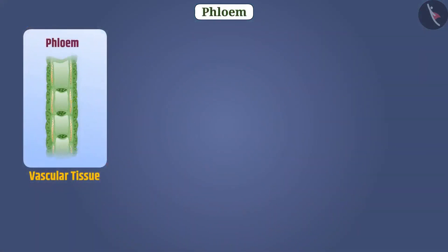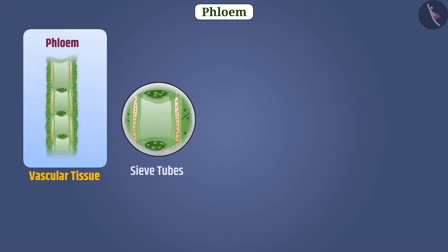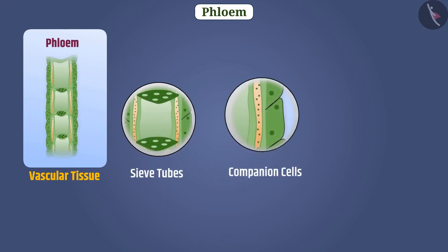The four types of cells: sieve tubes, companion cells, phloem parenchyma, and phloem fiber together form the vascular tissue phloem.